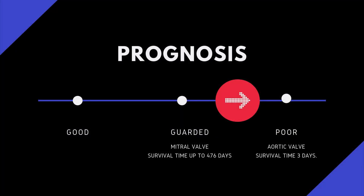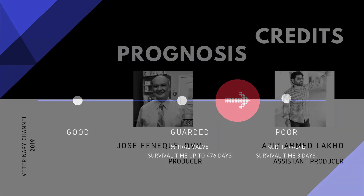Prognosis is very poor for dogs with bacterial endocarditis of the aortic valve, with survival times as low as 3 days. Bacterial endocarditis of the mitral valve has an average survival time of 476 days. Dogs with bacterial endocarditis usually die of left-sided heart failure or die suddenly from an embolus if pieces of the infection break off and lodge in other organs.